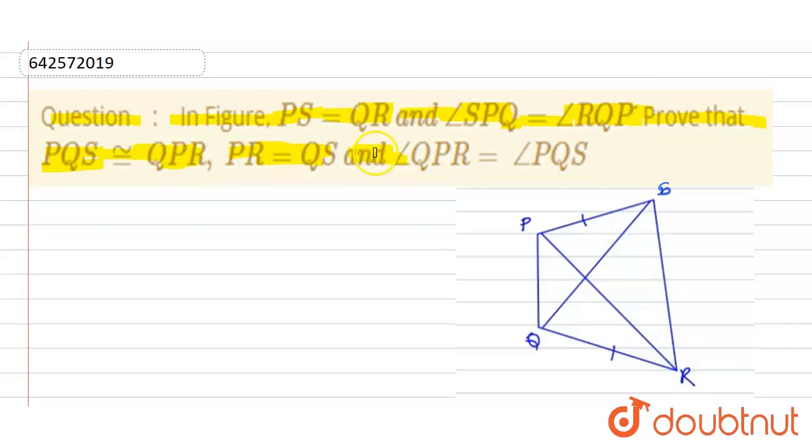And one more thing that we need to prove is angle QPR is equals to angle PQS. So coming to the solution, as we have given this figure with points P, Q, R and S.